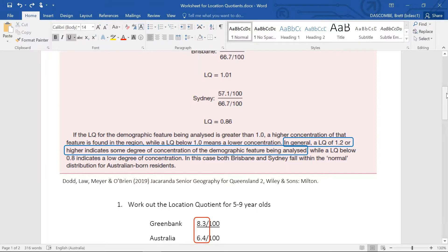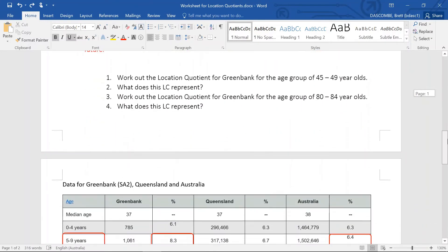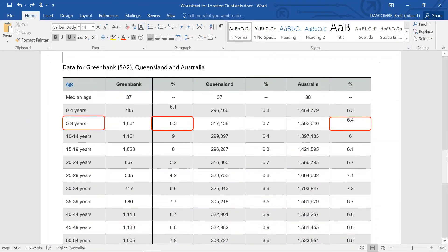So let's go and have a look at the data. We have got Greenbank data again. So we're going to do the 5 to 9 demographic here. So 8.3 percent of Greenbank population is 5 to 9 year olds, whereas Australia is 6.4.